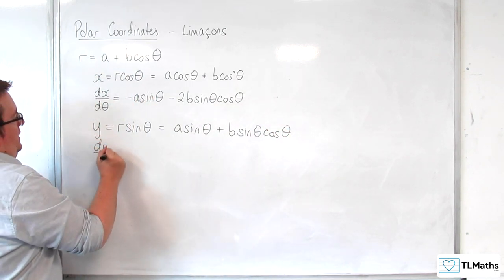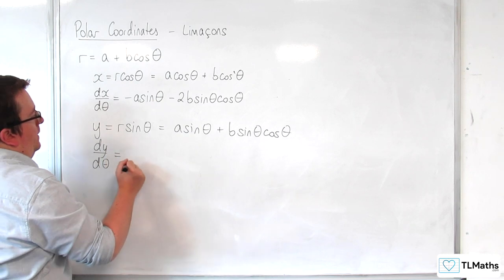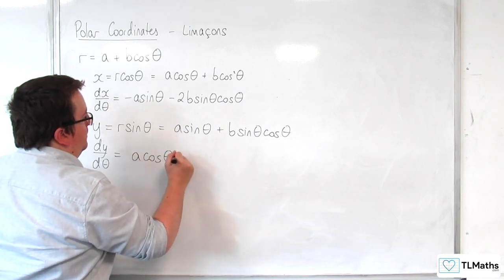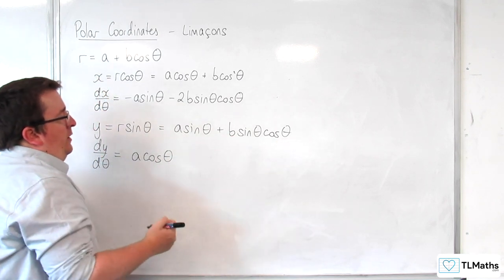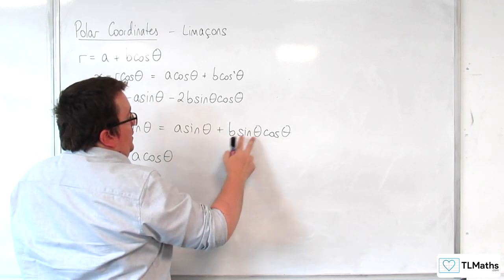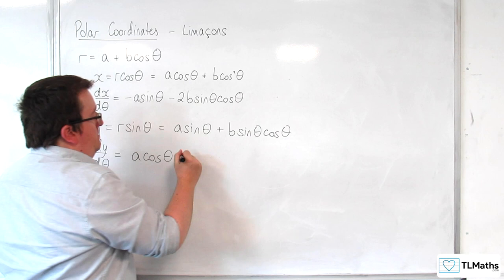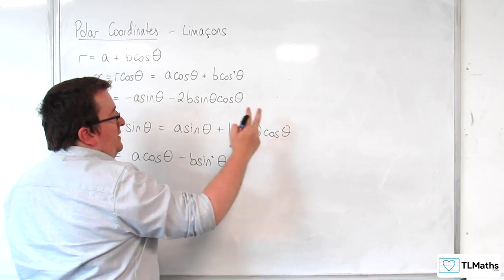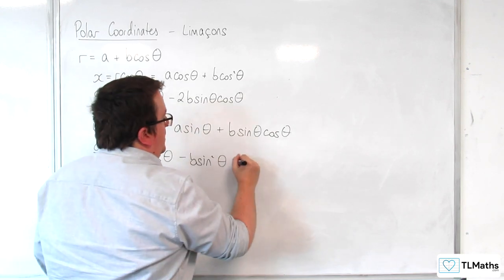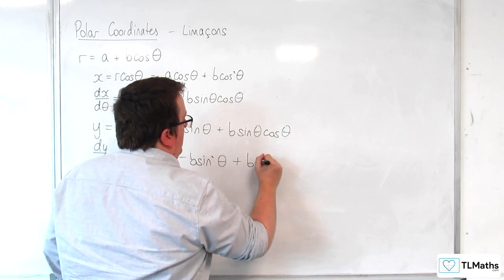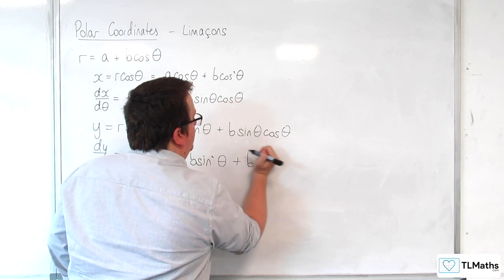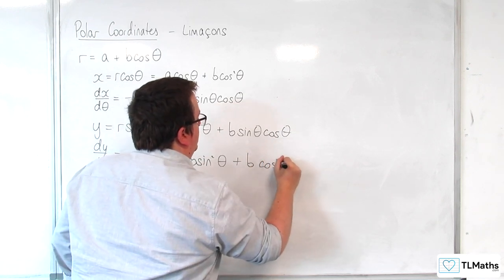So, dy by d theta would be equal to a cosine theta, and then differentiating this using the product rule, we'll have b sine theta times the derivative of cosine theta, so minus b sine squared theta. And then cosine theta times the derivative of b sine theta, plus b cosine squared theta.